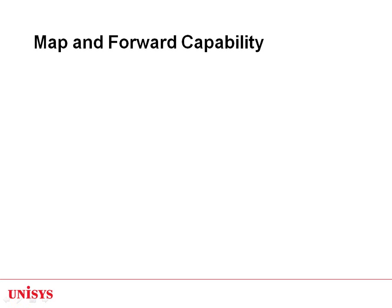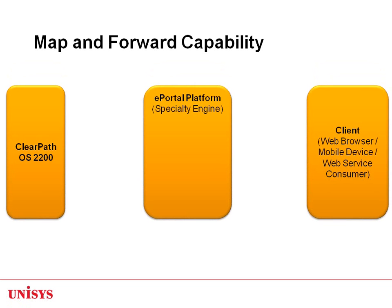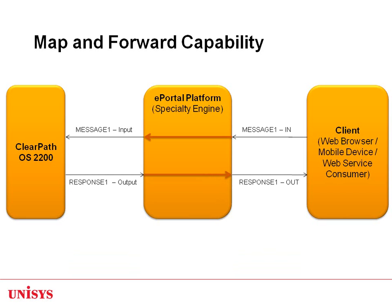In case no orchestration steps are done for a client or server message, ePortal Developer provides support for some default handling. When ePortal runtime receives a client message and no orchestration steps are defined for it, ePortal runtime can pick a server message with the same name as the client message, copy the field's content, and send the server message to the server application. This behavior is called Map and Forward capability and is useful for cases where client messages and server messages match one to one.